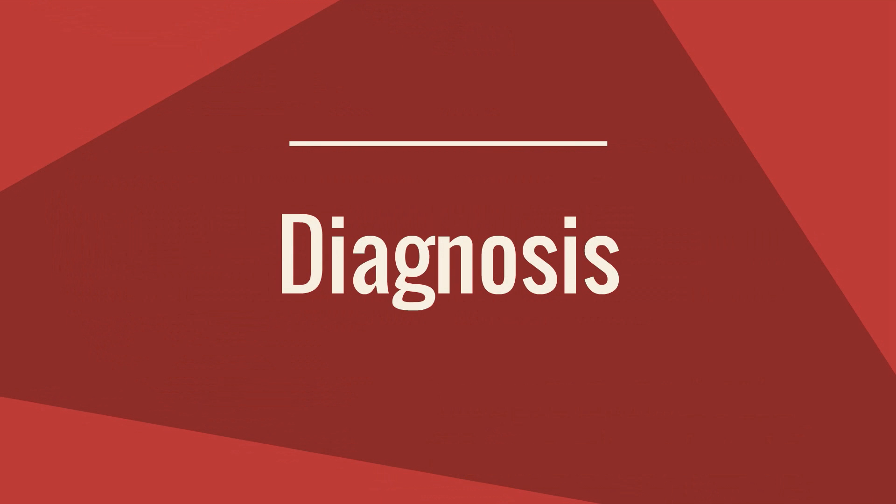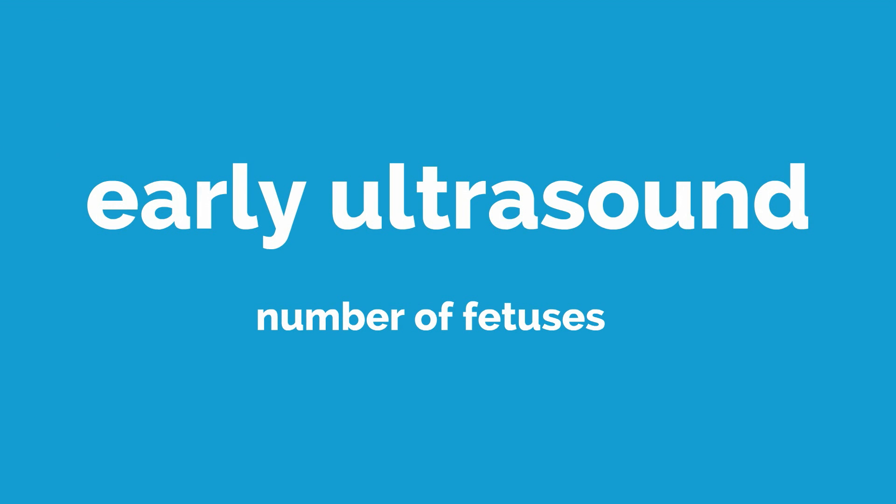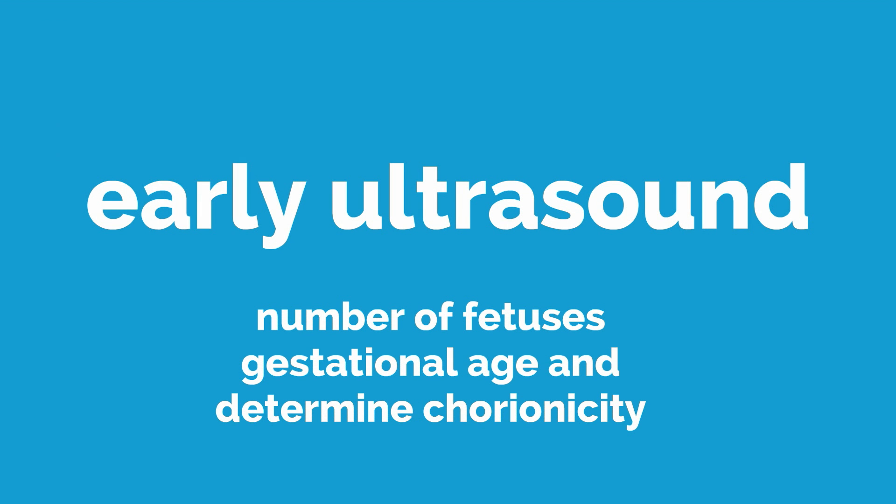Let's now move on to diagnosis. Early ultrasound can determine the number of fetuses, estimate the gestational age, and importantly determine the chorionicity. Chorionicity should be determined as early in the pregnancy as possible, optimally in the late first or early second trimester.